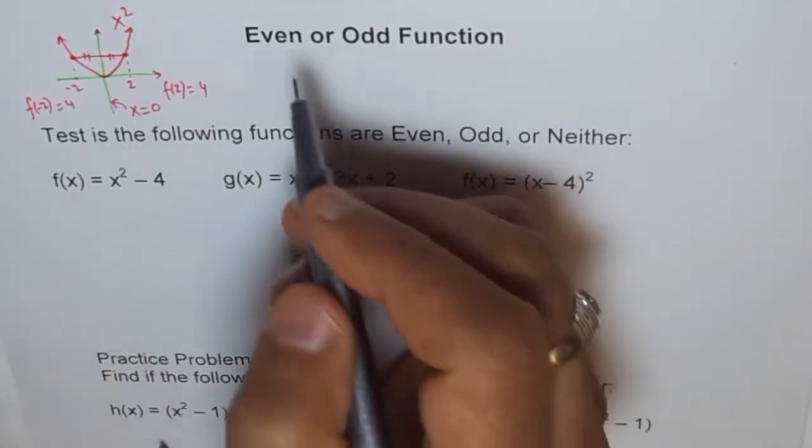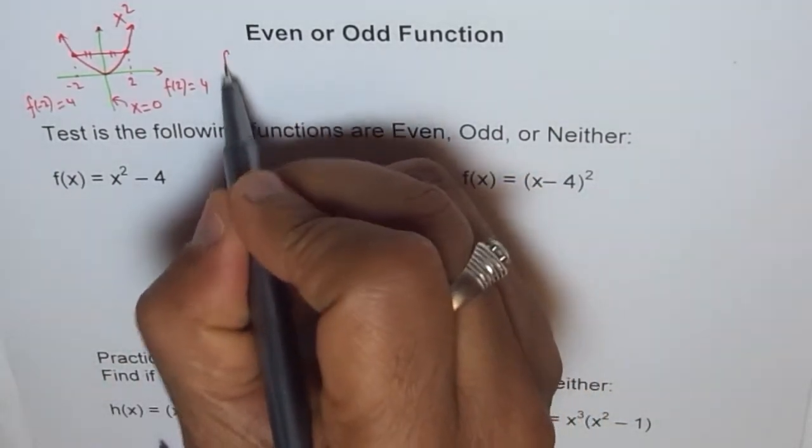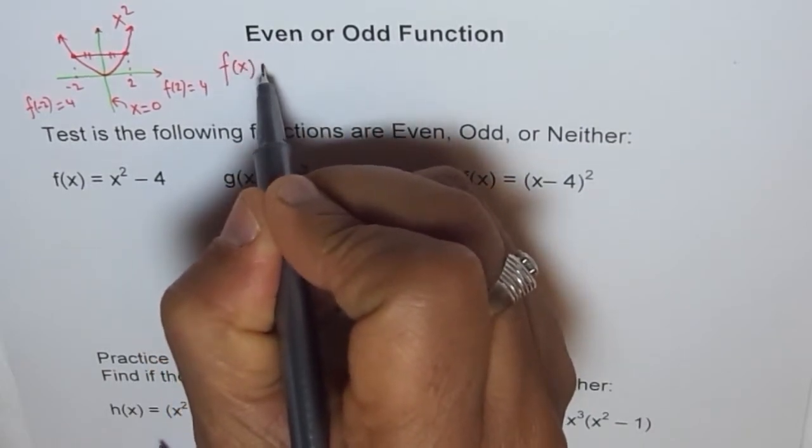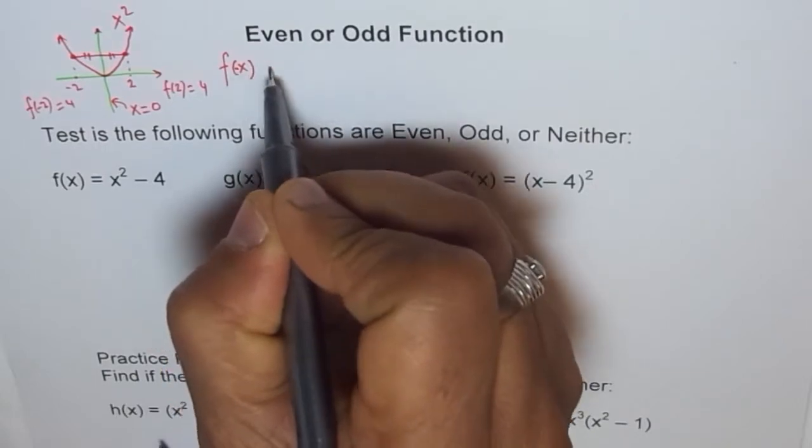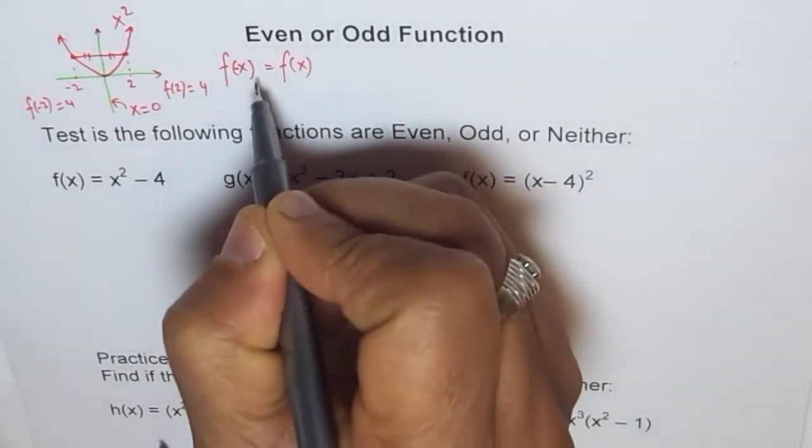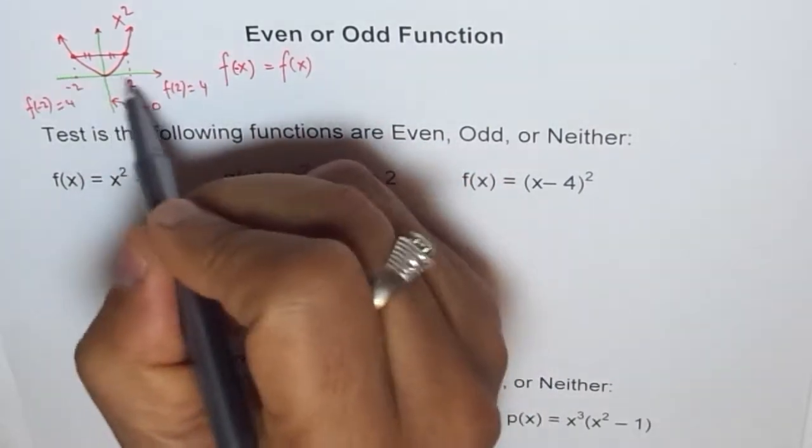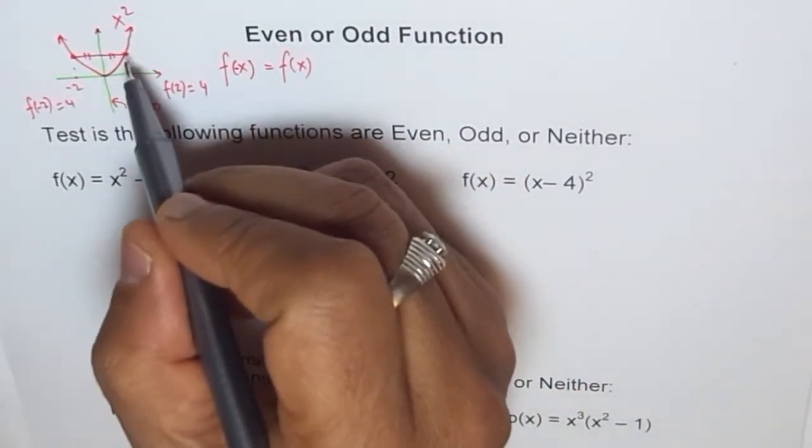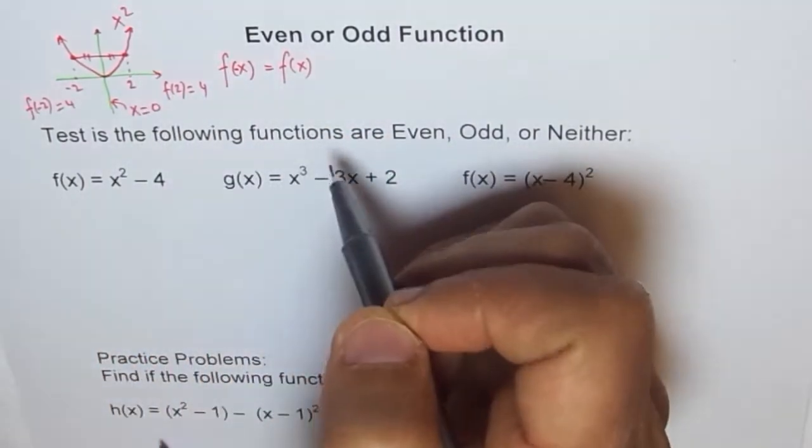You can try with all other numbers. So even functions are those functions where f of minus x is equal to f of x. So negative and positive values of x give the same value of f of x, the y values. So that's an even function.